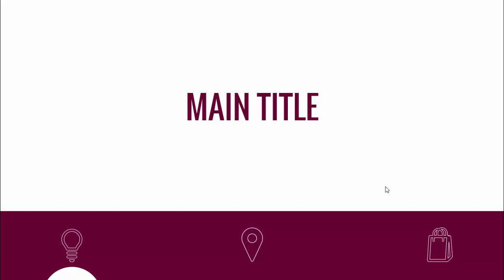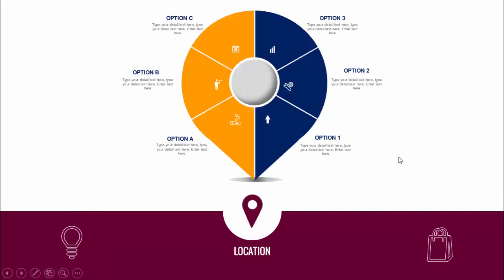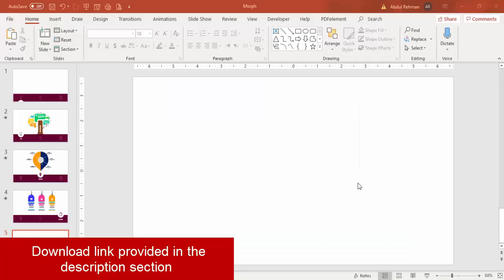In today's tutorial I'm going to show you how to create an animated menu navigation slide design in PowerPoint. I have added three icons here — an idea, a location, and a shopping icon — and this can be increased to four or five also. You can add your main title, and when you click, the first icon goes up and the text appears. This is the second one, the location, and the third is the shopping.